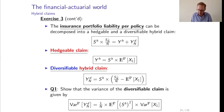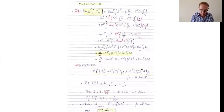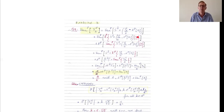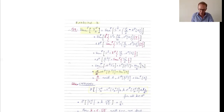Let us prove the formula for the variance of Y_DN. By the law of total variance, the variance of Y_DN equals the variance of the conditional expectation plus the expectation of the conditional variance, conditioning on Y — the financial market information at time one. Working this out, we find the variance of Y_DN equals (a/N) times the expectation of S_H squared multiplied by the variance of X_1, confirming the factor 1/N that disappears as the portfolio grows.